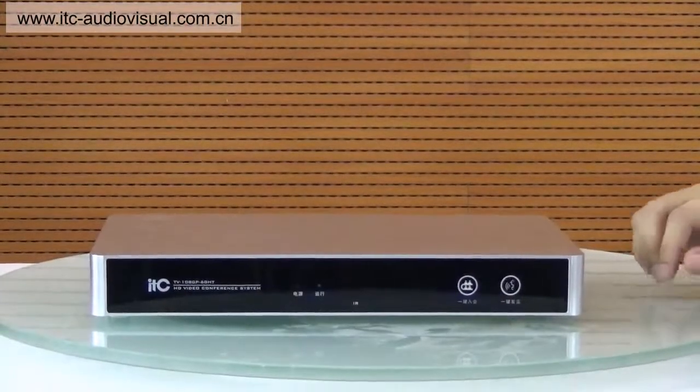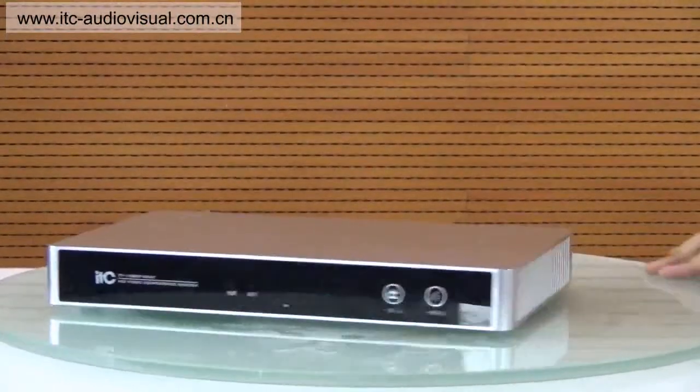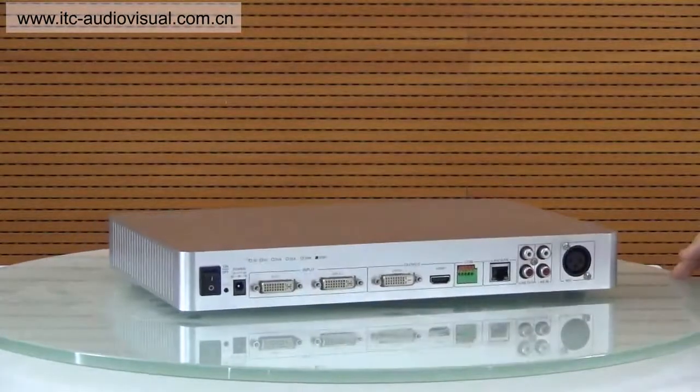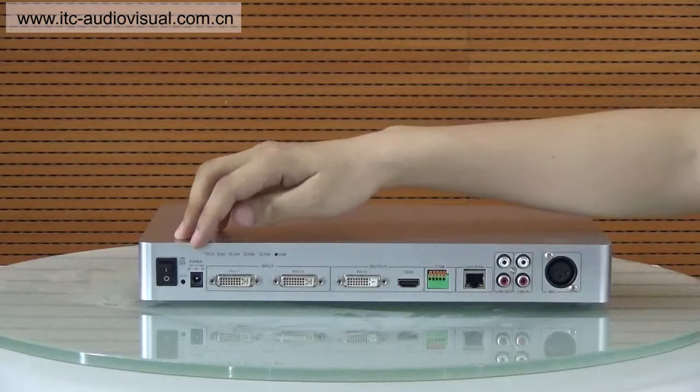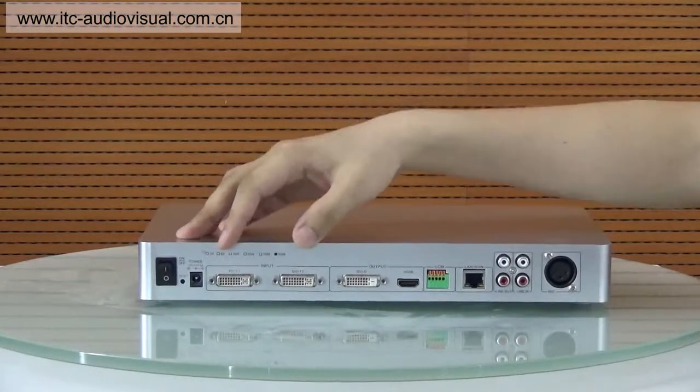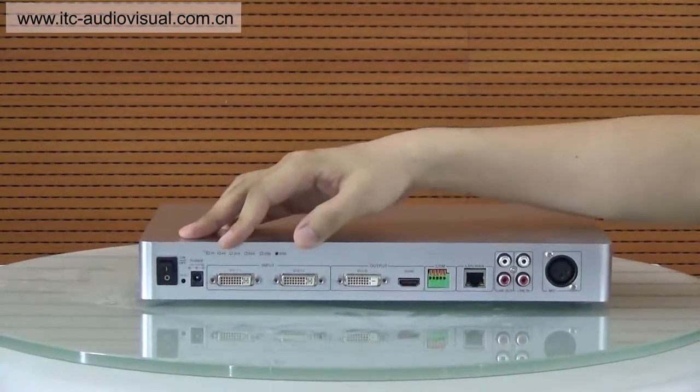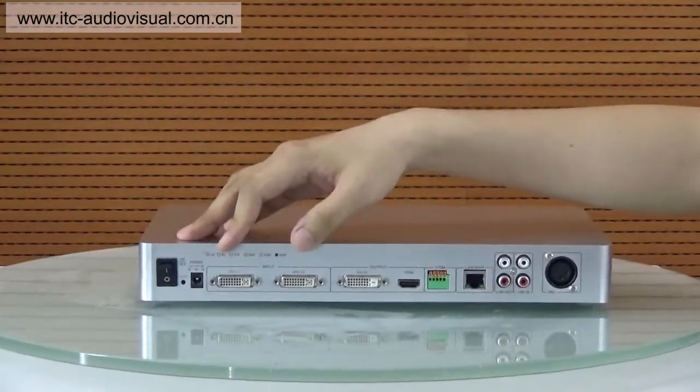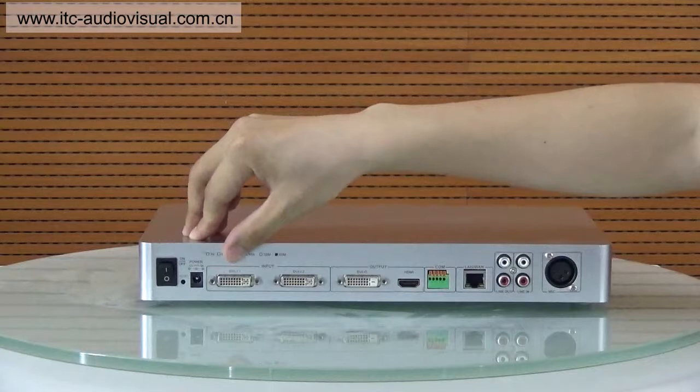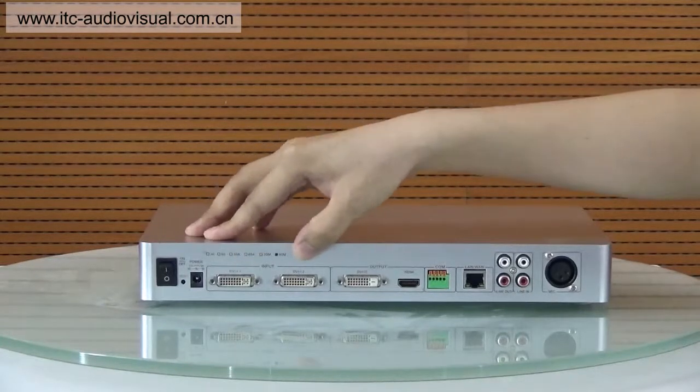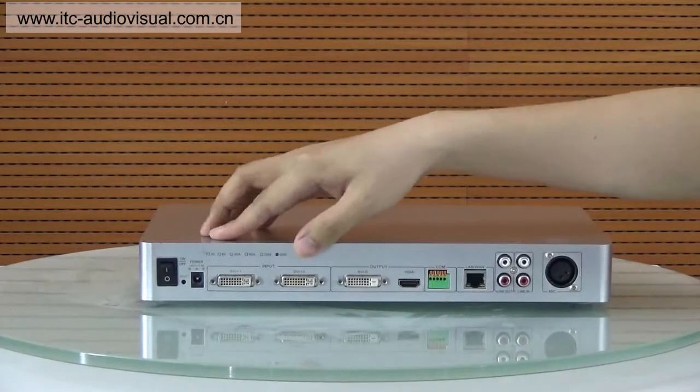Let's talk about the rear panel of the terminal. It's the power switch and this is for the power supply. These two DVI-I interfaces are for the input. This is for the main stream and the other is for the auxiliary stream.